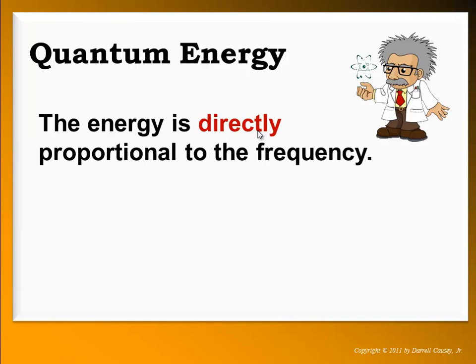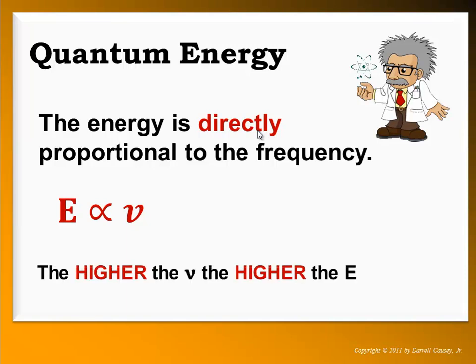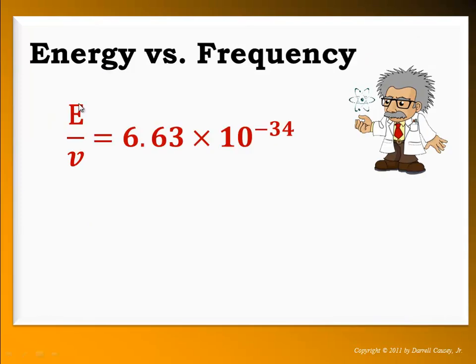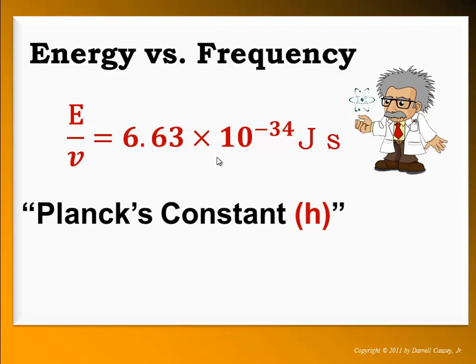Now quantum energy is directly proportional to the frequency, as described by this proportional. And the higher the frequency, the higher the energy. When he took the energy and he compared it to the frequency, he kept getting a 6.63 times 10 to the negative 34 joules seconds. Now this value was constant no matter what the wavelength. And today we call that Planck's constant. And we symbolize it with an h.